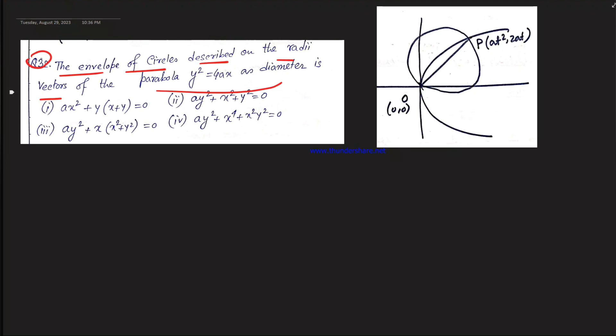Next problem: the envelope of circles described on the radius vectors of the parabola y² = 4x as diameter. The radius vectors in plural form — for y² = 4x, we target each radius vector and the corresponding circle. A family (bunch) of circles is created.